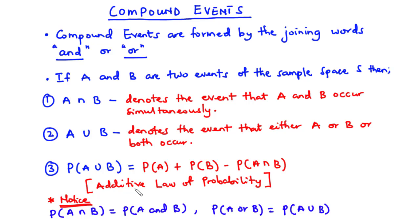And this is what we call the additive law of probability. Notice that the probability of A intersection B is the same as the probability of A and B, meaning A intersection B is the same as A and B. And the probability of A or B is the same as the probability of A union B. Now with this information, let's solve a few questions.